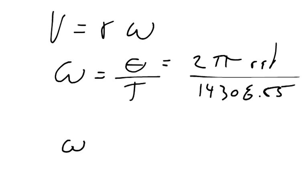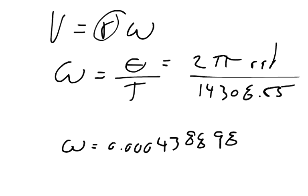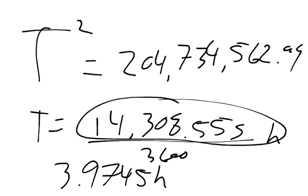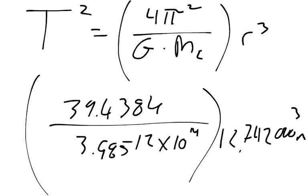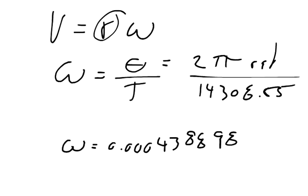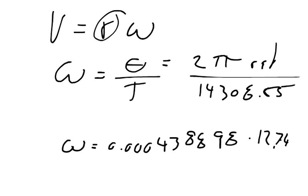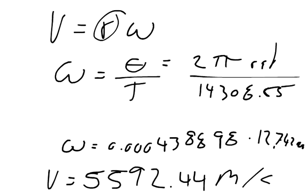And when you divide that out, you get that the angular speed is equal to 0.000438898. And so then you've got to multiply that times the radius, which we said was 12,742,000. And you get the velocity is equal to 5592.44 meters per second. And that's the units that it wants it in, so that is the answer.